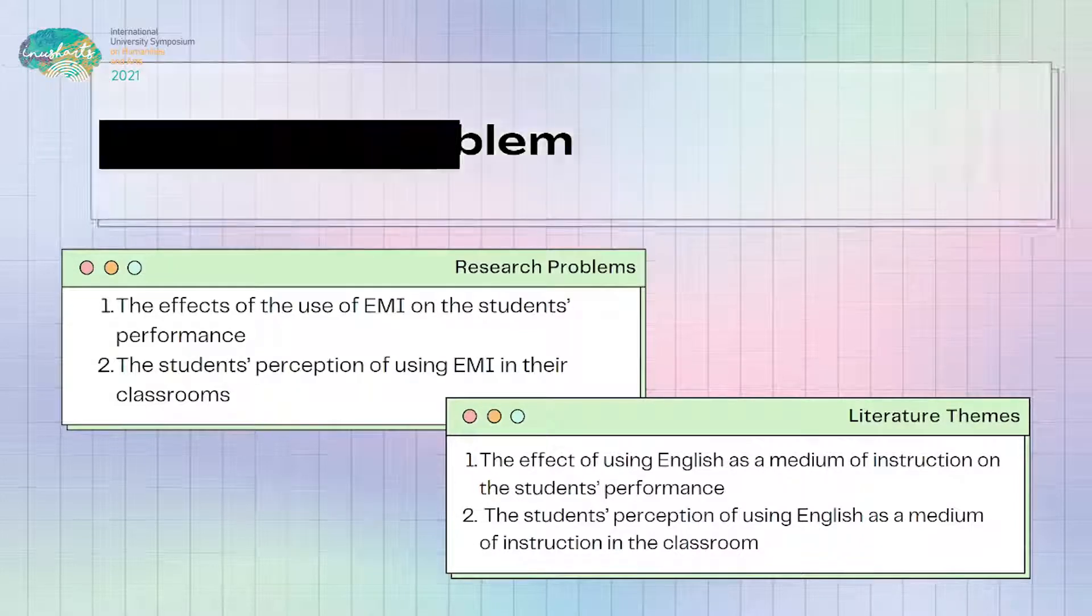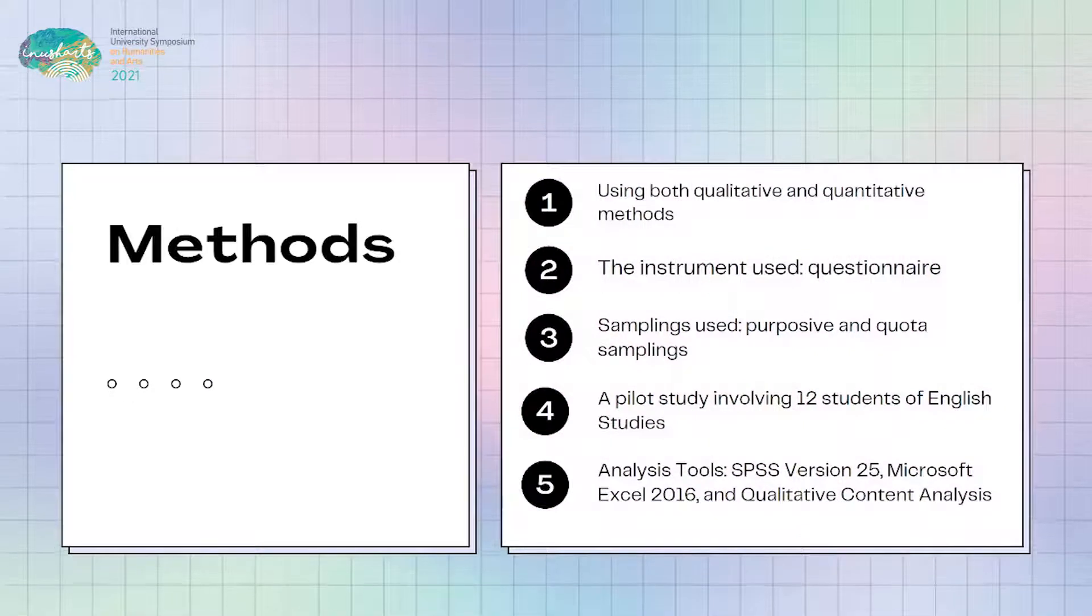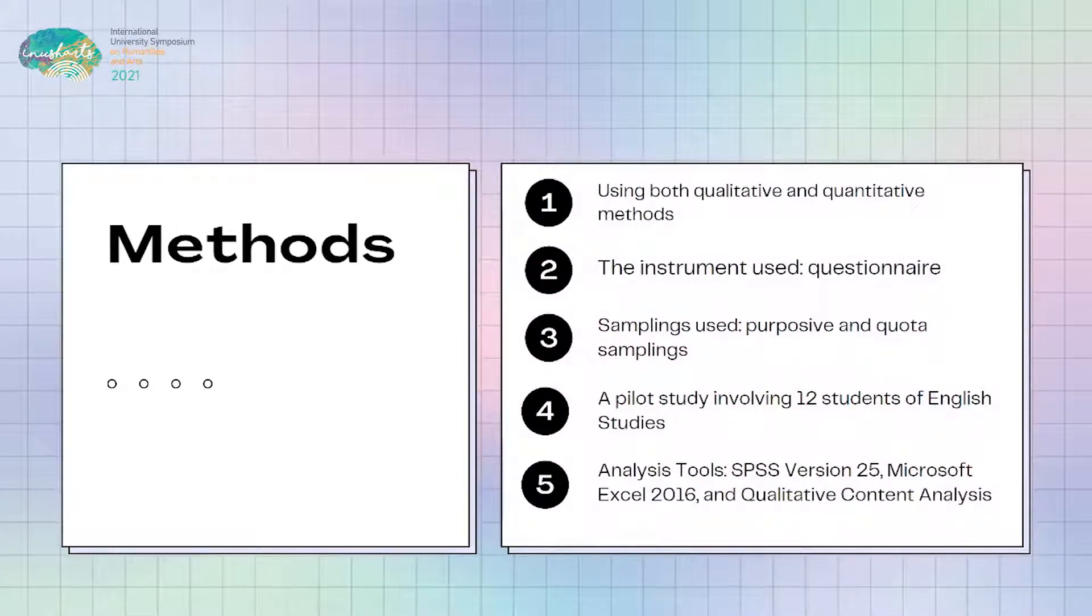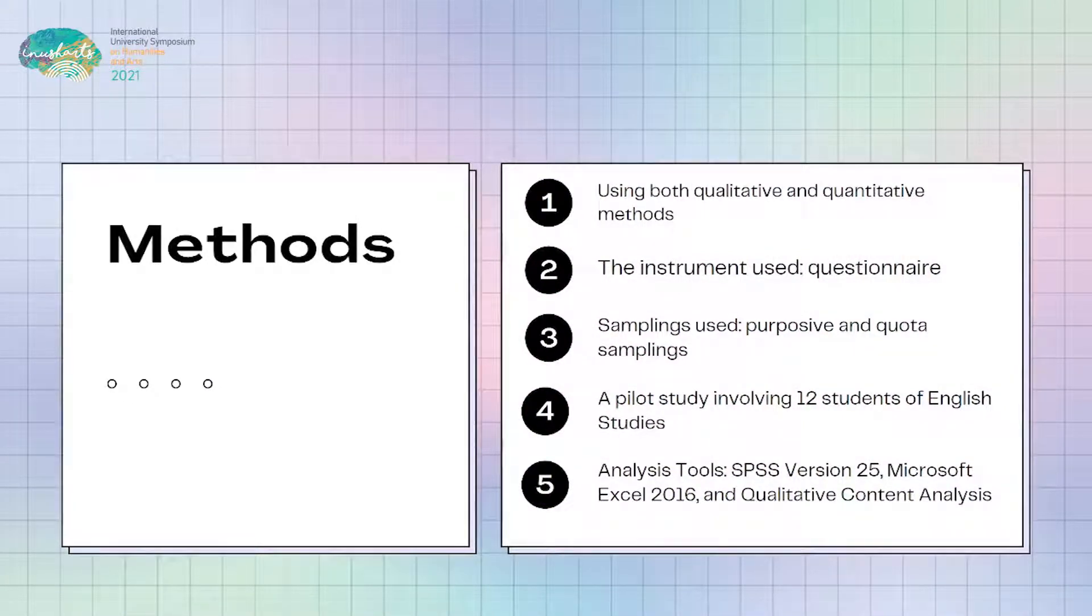This research used both qualitative and quantitative methods. The instrument used in the study was a questionnaire in order to generate the adequate number of quantitative data. The data was gathered by using purposive and quota samplings. The pilot study was conducted involving 12 students of English studies in order to generate several possible improvements needed about the questionnaire.